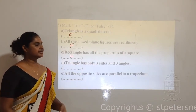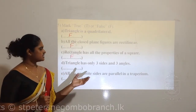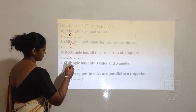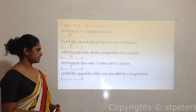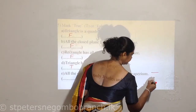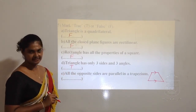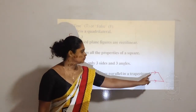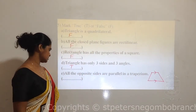Fourth: Triangle has only three sides and three angles. Is it true? Yes, because it has three sides and three angles only. So it is true. Fifth: All the opposite sides are parallel in a trapezium. Trapezium has only one pair of parallel sides - only one pair of opposite sides is parallel, the other pair is not parallel. So this statement is false.